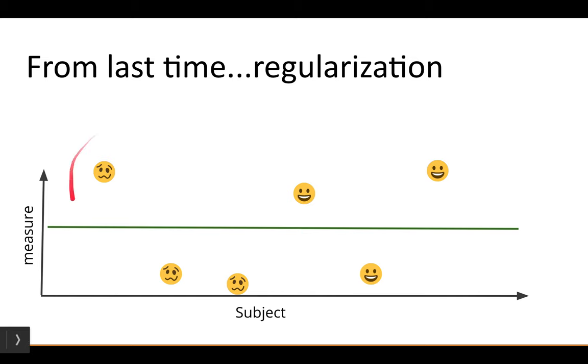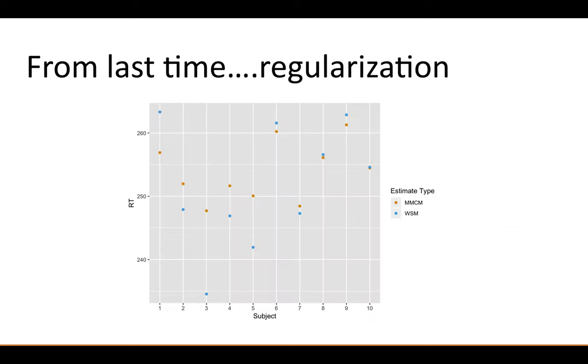The regularization works so that all the within-subject estimates for the mean are going to be biased toward the group mean as a type of stabilization. The amount of regularization depends on the amount of data each subject has, which I'm going to specifically define in this lesson. These happy subjects have more data than these uneasy subjects, so the regularized estimates of the uneasy subjects get pushed more toward the mean than the subjects with more data.